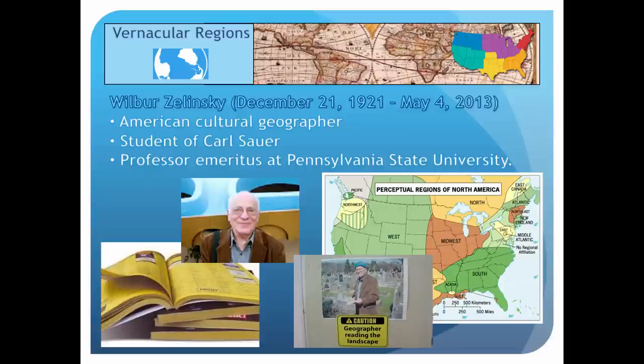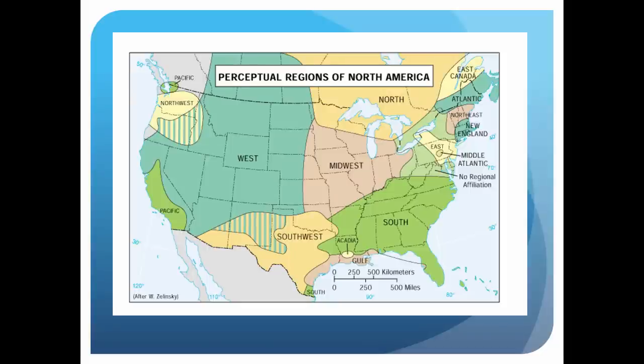Wilbur Zelinsky is a famous cultural geographer who worked extensively with perceptual regions. He looked at telephone books from more than 276 major metro areas in the U.S. and Canada, noting businesses that use terms to define region, like the Southern Printing Company. He used this data to create a map identifying 12 major perceptual regions of North America in an article entitled 'North America's Vernacular Regions.' Some regions overlap and there are also some places with no regional affiliation at all.